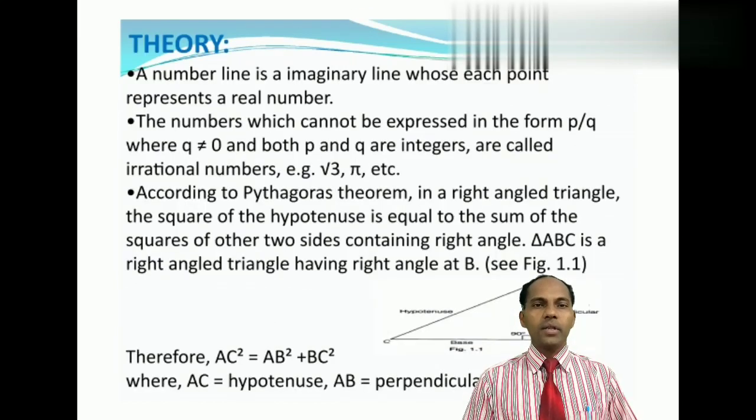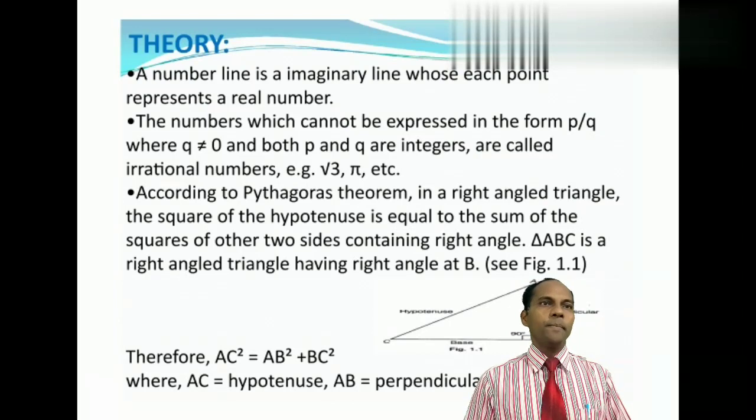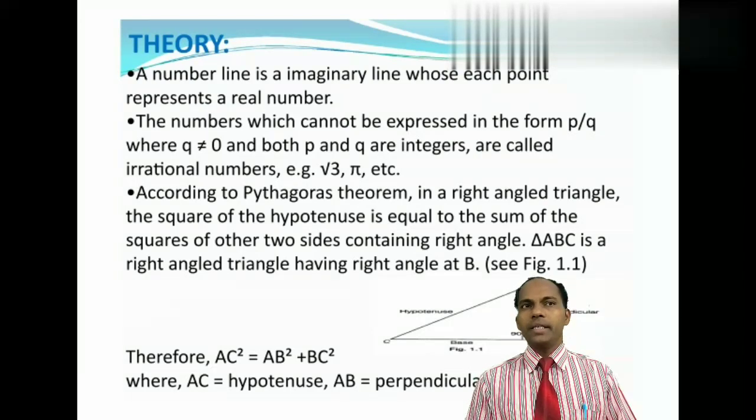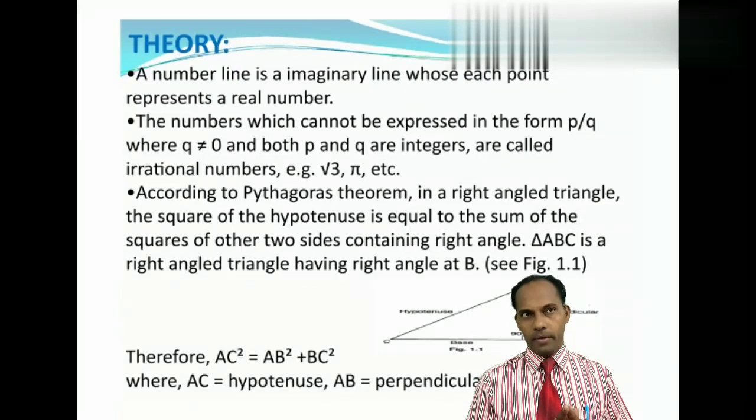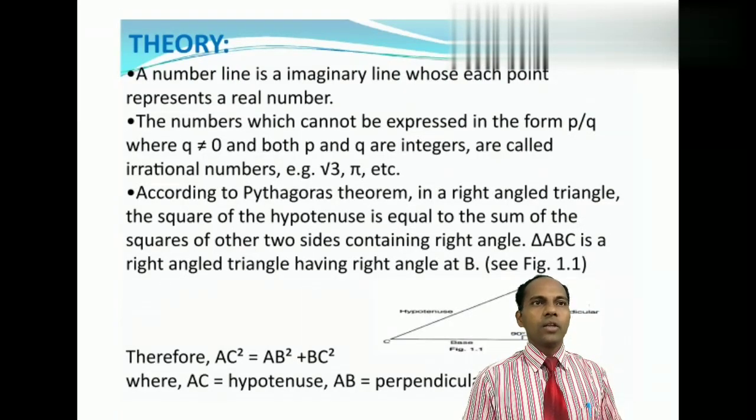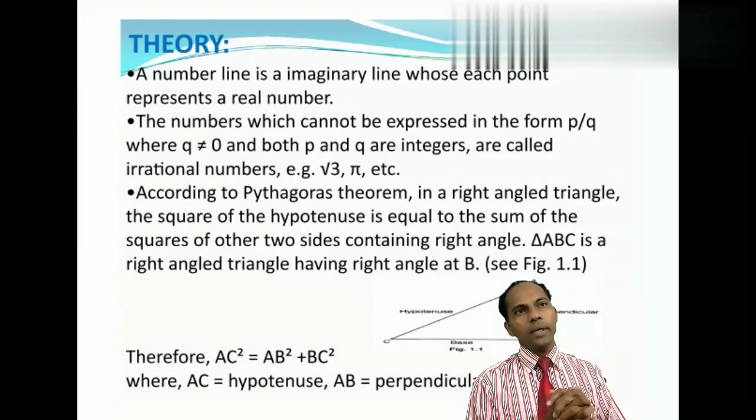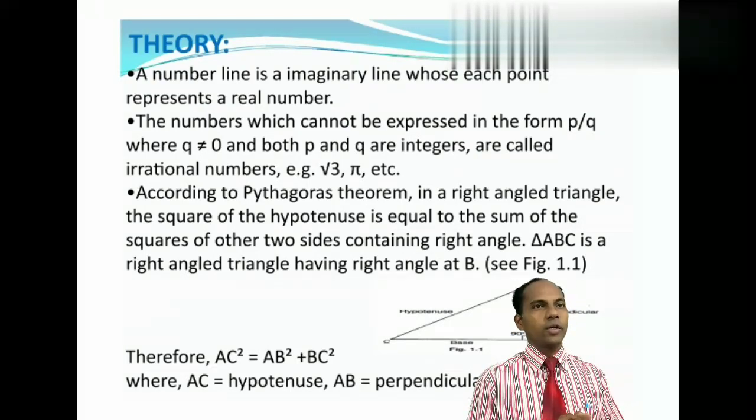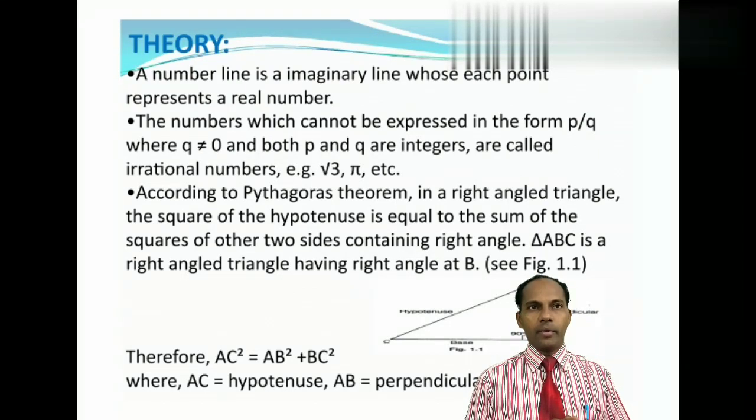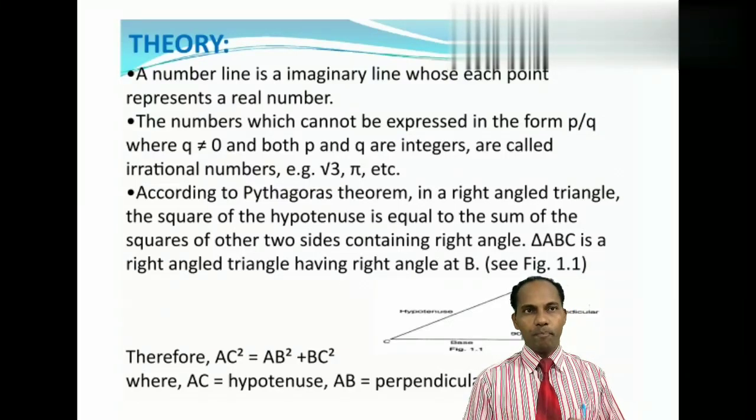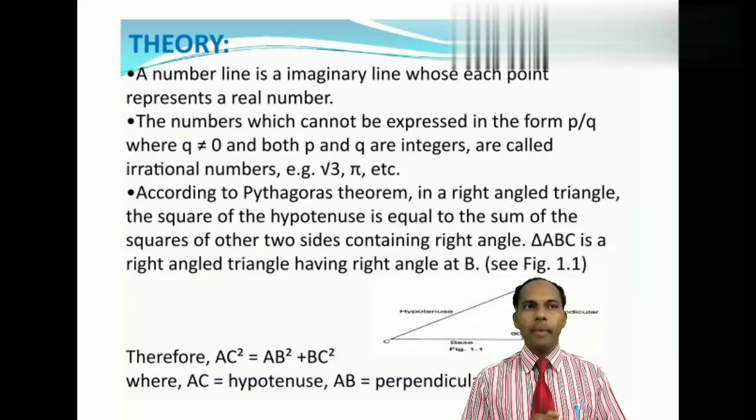Now, for this activity, we have to know about the theory. A number line is an imaginary line whose each point represents a real number. Second, the numbers which cannot be expressed in the form of p by q, where q is not equal to 0, and both p and q are integers, are called irrational numbers. For example, root 3, root 2, root 5, pi, etc.